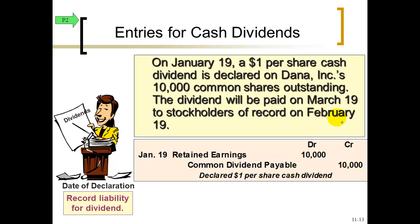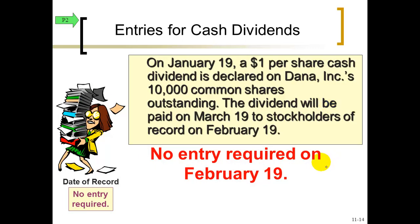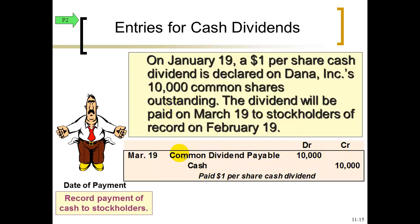On February 19th — the date of record — you have to own the shares on this date to collect the dividend. If you sell your shares before February 19th, you won't collect the dividend. On February 19th there is no journal entry required. Then on March 19th — the date of payment — we know paid means cash is credited, and what we're paying is the liability we accrued back on January 19th, so we reduce that liability with a debit. Again, there are three dates: declaration date, date of record, and date of payment, and only two require journal entries.